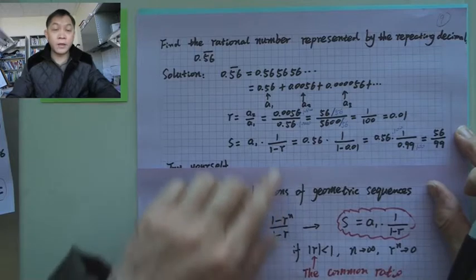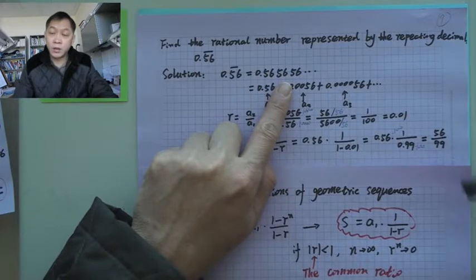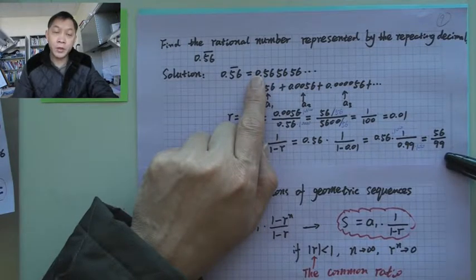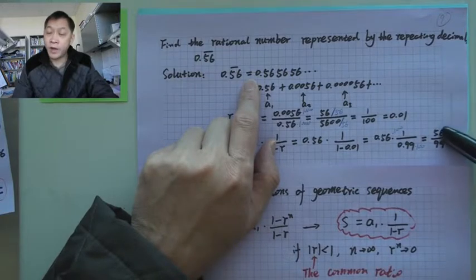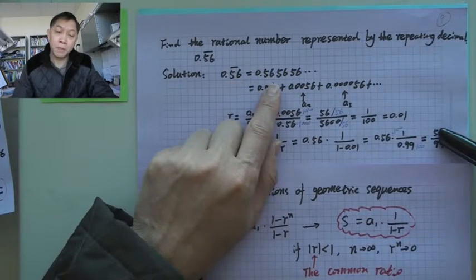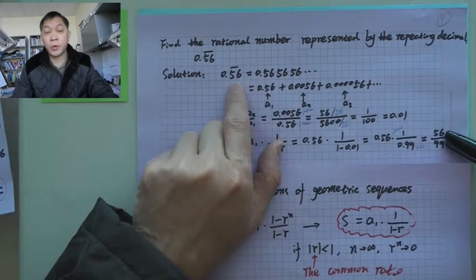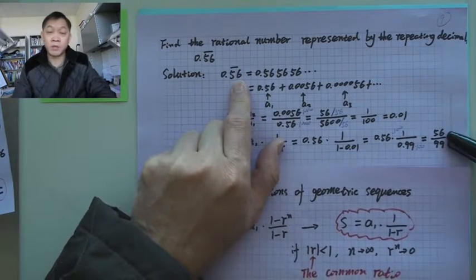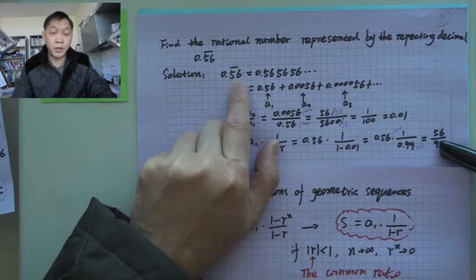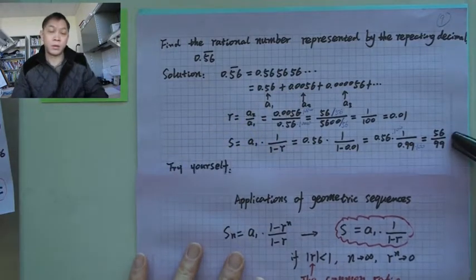So this basically tells us that a repeating decimal number can be converted to a fractional number. That's why we say a rational number is a fractional number or is a repeating decimal number. If a number does not have a repeating expansion, then this number will not be rational, because it cannot be converted to a fraction. But in this case, it has a repeating expansion, so then it can be converted to a fractional number.